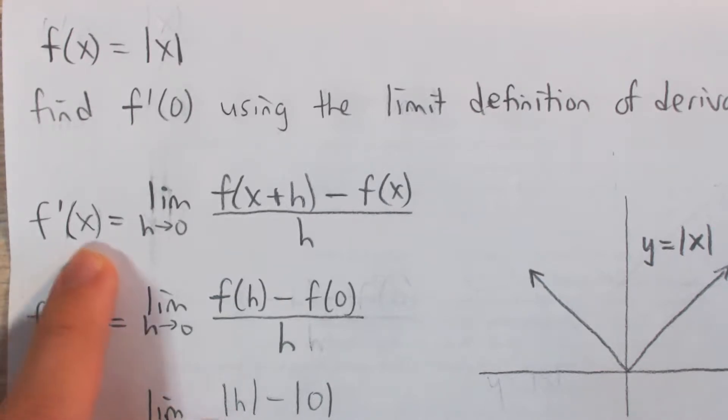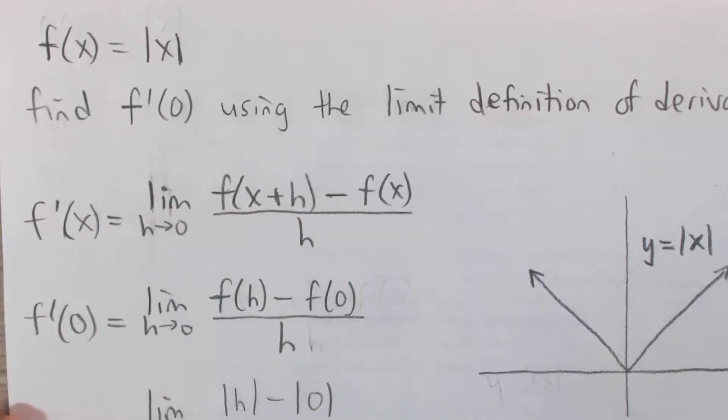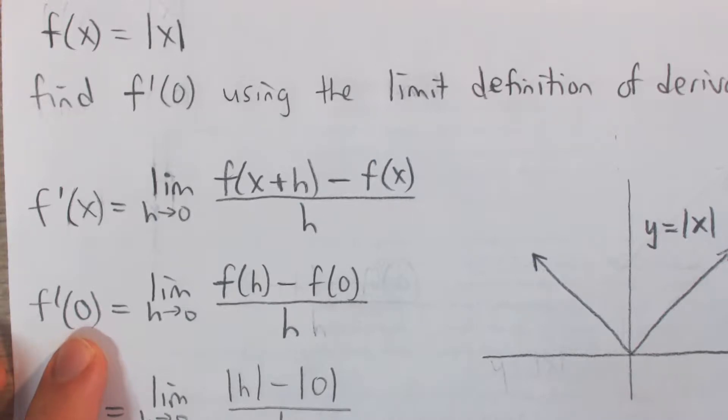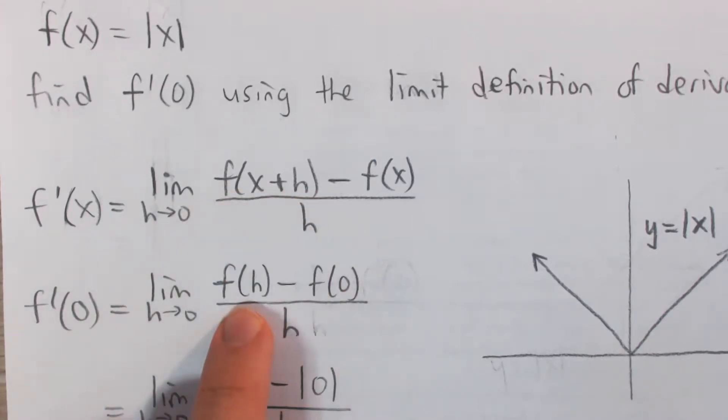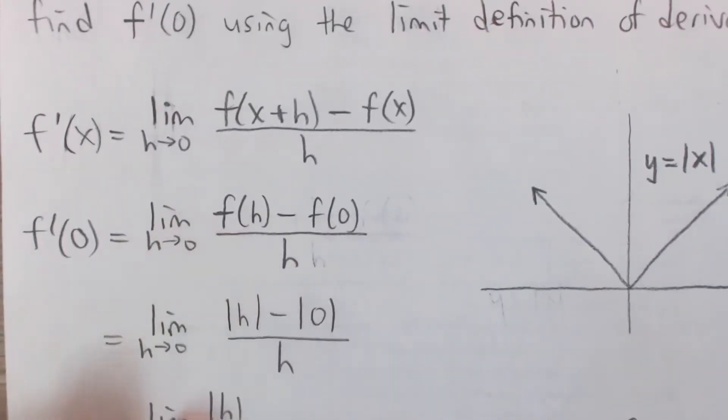Just remember, this is the definition. The derivative at any value x is the limit as h goes to 0 of f of x plus h minus f of x all over h. And in this specific case at 0, we just plug in 0 for x, and so we get f of 0 plus h, or f of h, and f of 0.